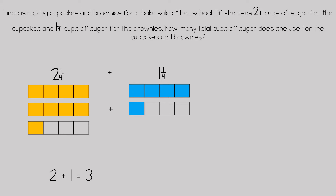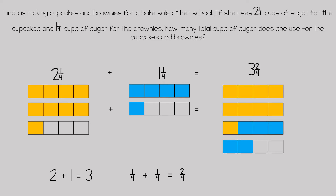Two plus one is three when we add the whole numbers together. One-fourth plus one-fourth equals two-fourths, so our answer would be three and two-fourths. Linda would need three and two-fourths cups of sugar for her cupcakes and her brownies.